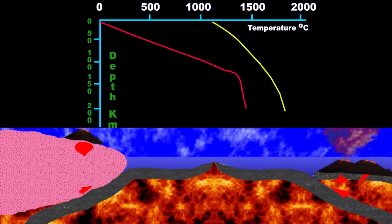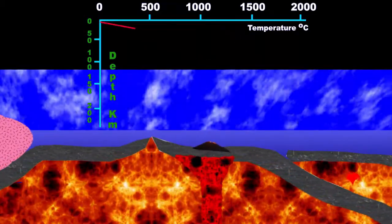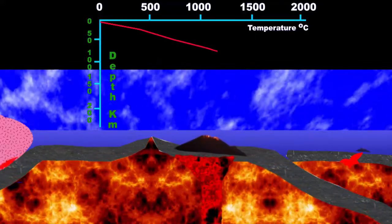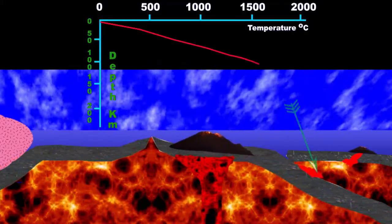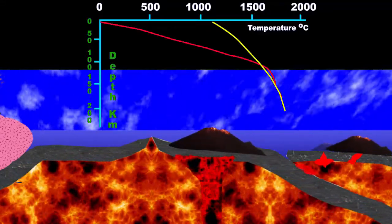Should a hot spot rise below the ocean crust, as in the case with the Hawaiian Islands, we should see a geothermal gradient somewhat between that of the mid-ocean ridge and the stable ocean crust, again stabilizing out below about 100 kilometers down in the mantle.